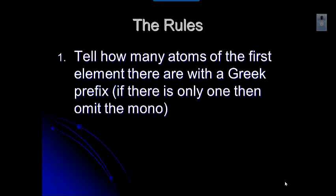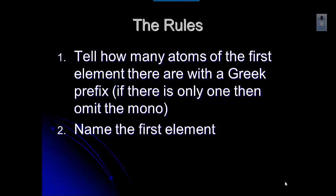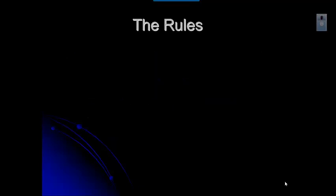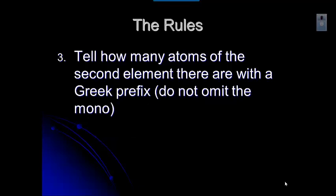All right. So here are the rules. The first thing we do is tell how many atoms of the first element there are with a Greek prefix. If there is only one of that atom, then we omit the mono. So you never use mono, but you use di through deca on that first element. Then you name the first element. You give the actual name of that element. Then the next thing that we do is tell how many atoms of the second element there are. And we use a Greek prefix whether there's one or ten. All the way through, you use prefix on every one.